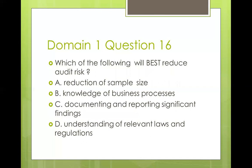Question sixteen: which of the following will best reduce audit risk? Options: reduction of sample size, knowledge of business processes, documenting and reporting significant findings, or understanding of relevant laws and regulations. Reducing sample size puts the auditor at a disadvantage, so A is eliminated. Options B, C, and D are all valid points, but the best answer is B — knowledge of business processes. Understanding business processes will also cover understanding the relevant laws and regulations and help identify significant findings.